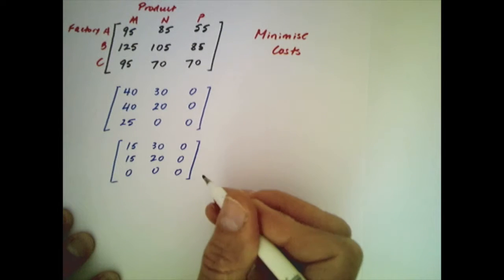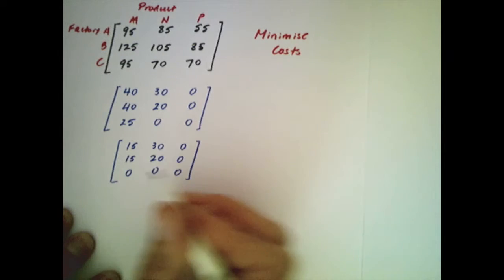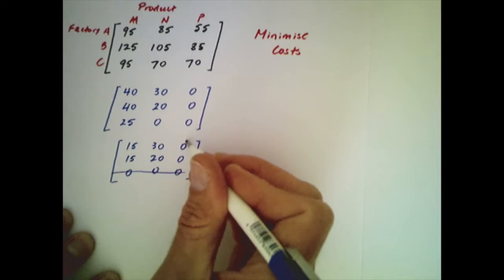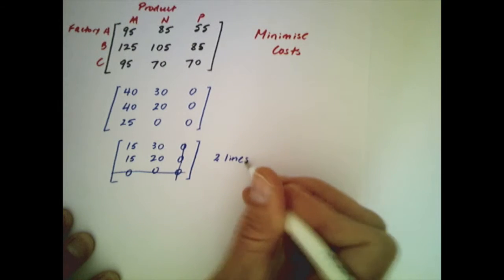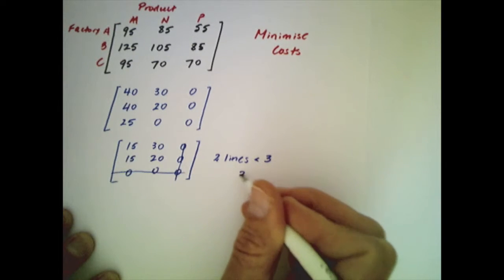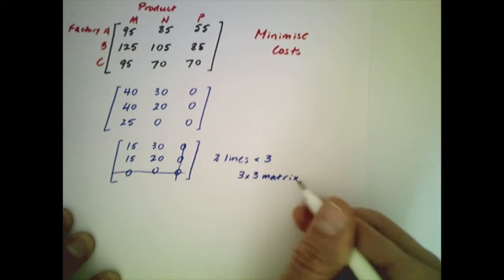Now what we do is we look to cross out using horizontal and vertical lines the zeros, but we want to minimize the number of lines that we use. So we've crossed out all the zeros using only two lines. Now it is a three by three matrix, that means that we've got more work to do. We actually want to get three lines at this point.